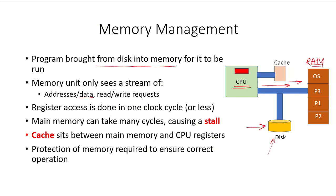The storage possibilities in a computer system also include registers, which are inside the processor, and access to a register can be done in less than one clock cycle. But main memory access can take many clock cycles and may cause a stall — meaning the processor will have to wait for that particular request to be completed.